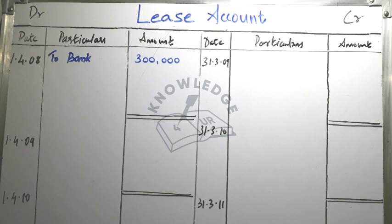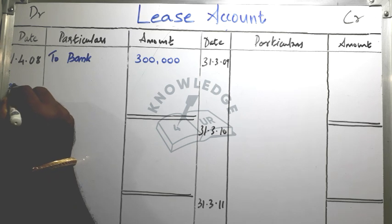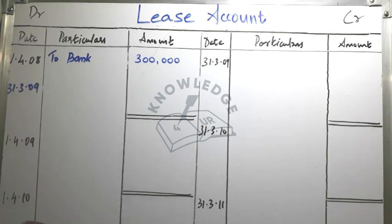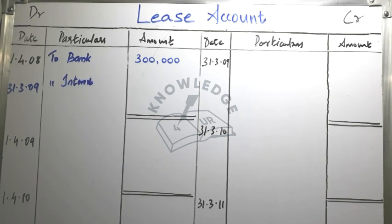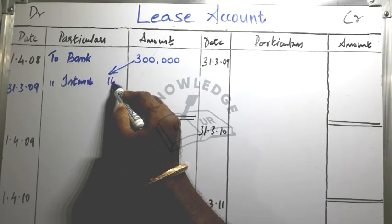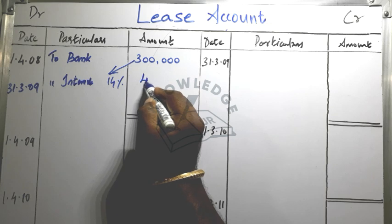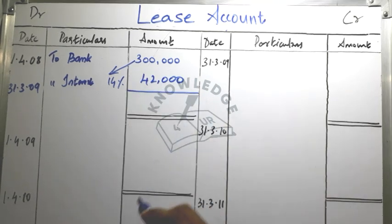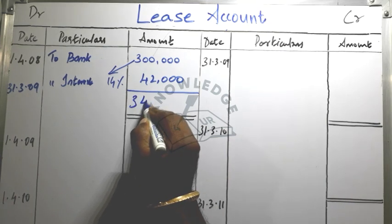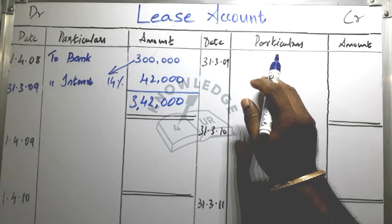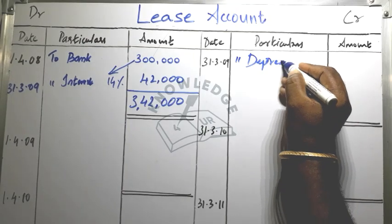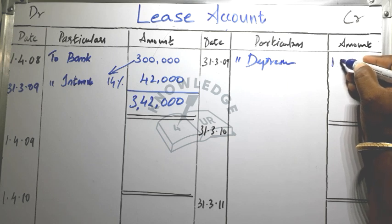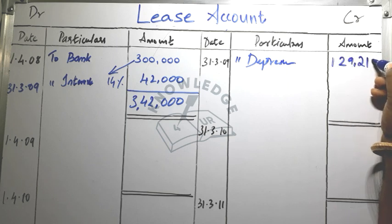The interest and depreciation are calculated. For 31-03-2009, we have to calculate the interest for the first year. Interest is 14% of 3 lakhs, that is Rs. 42,000. Depreciation provided is Rs. 1,29,290. We have to get the interest in the first year by depreciation.